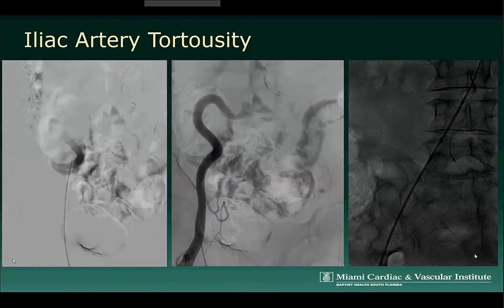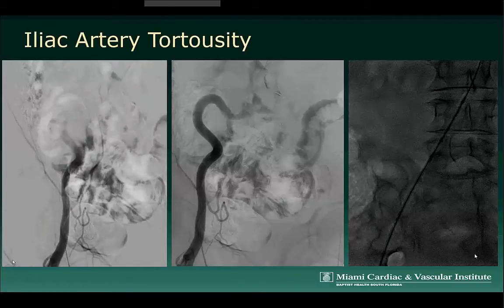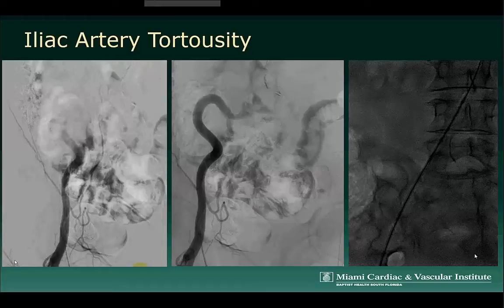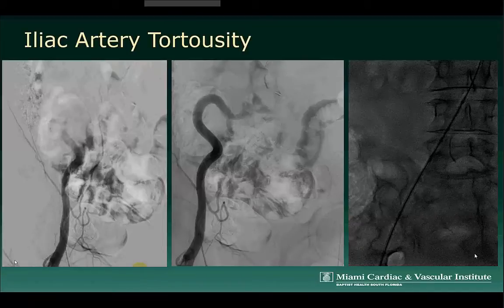These images demonstrate the extreme tortuosity noted in the patient's right iliac arterial system. There is nearly a 180-degree turn of the right external iliac artery. The third image demonstrates that after placement of a stiff guide wire and a long sheath, the iliac tortuosity was straightened. However, once the stiff guide wire was removed, the iliac tortuosity was again apparent and bent the sheath, resulting in problems with manipulation of a manual catheter.